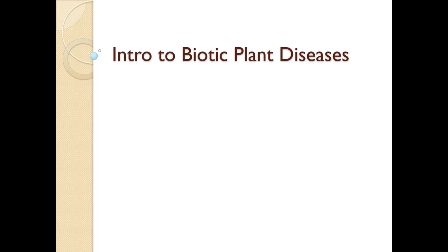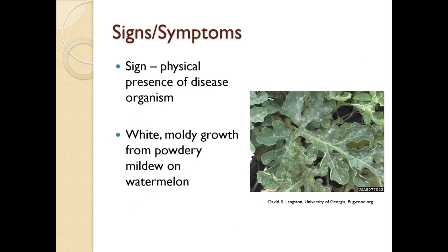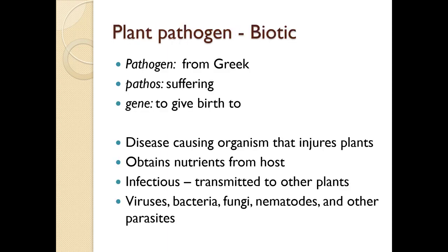In the diagnosis of plant problems, we're going to delve more deeply into biotic plant diseases. Plant disease is any condition that interferes with normal plant development and injures the plant. This is camellia flower blight, which is a fungal disease. In diagnosis, a sign is the physical presence of a disease organism — in this case, the white moldy growth from powdery mildew on watermelon. A symptom is the abnormal appearance on the plant resulting from disease, as seen here with rose mosaic virus. A pathogen, from the Greek pathos meaning suffering and gene meaning to give birth, refers to disease-causing organisms that injure plants, obtaining nutrients from the host and being infectious and transmissible to other plants.